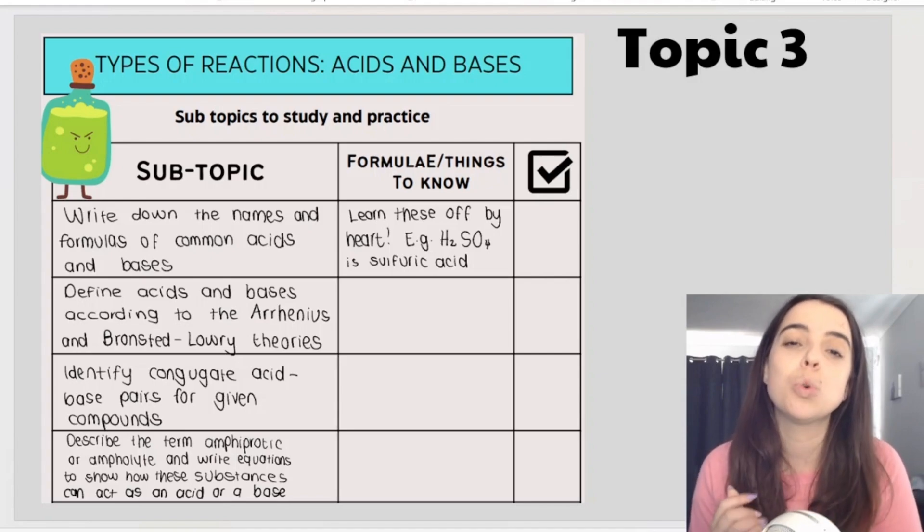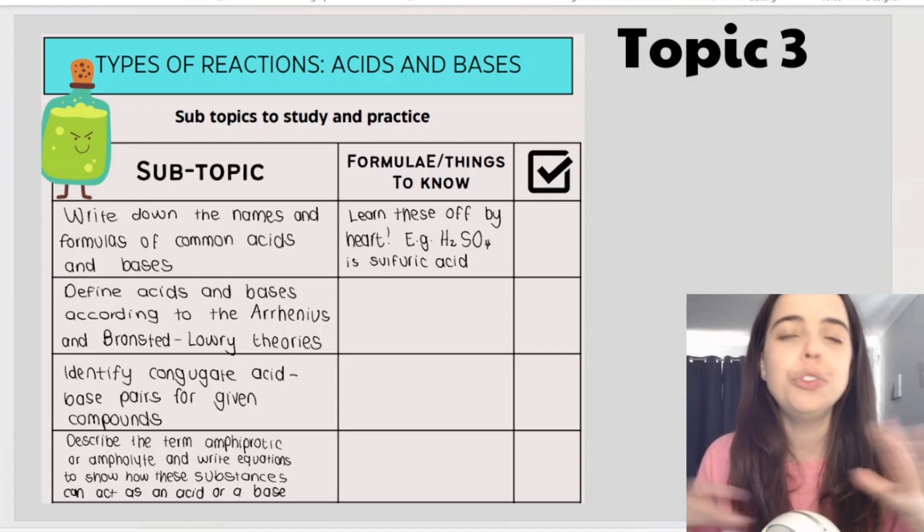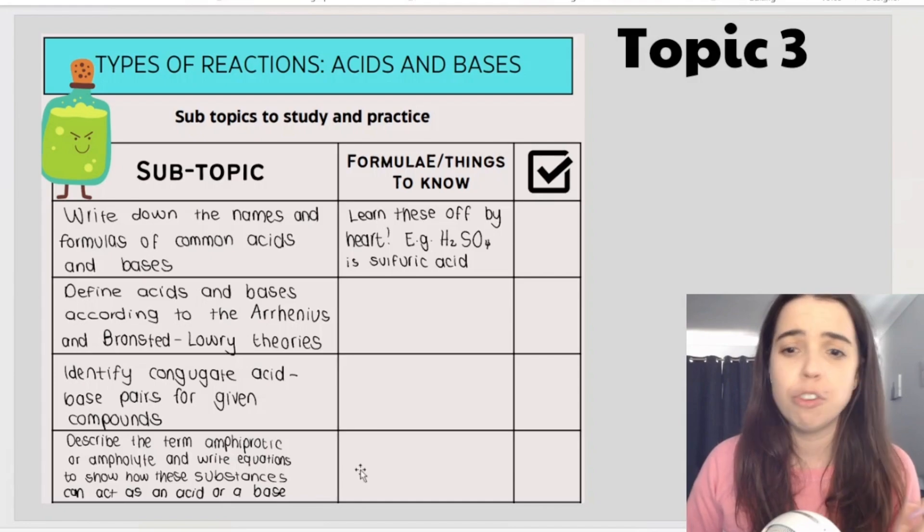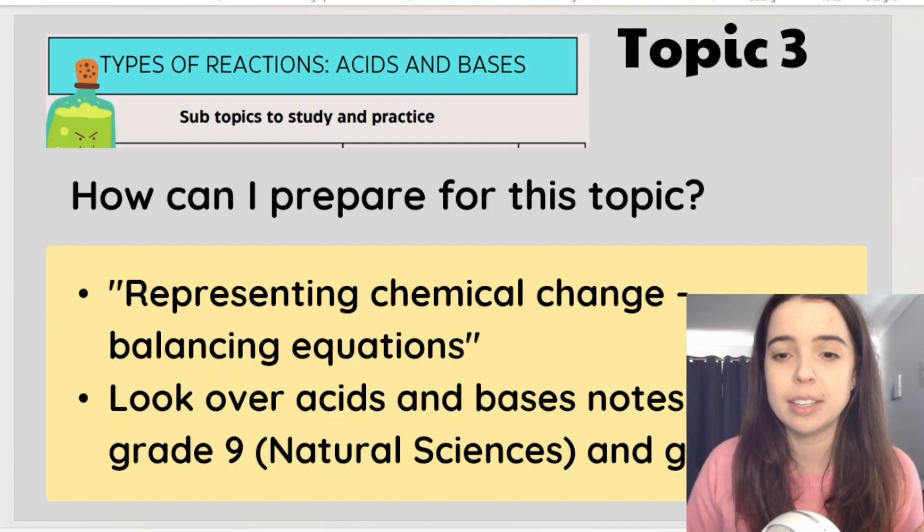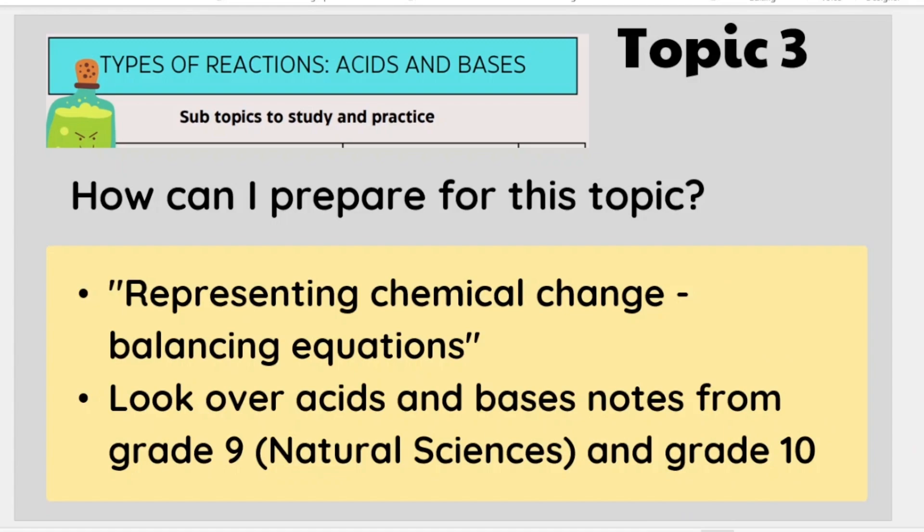So if you haven't done it in grade 10 and you're like whoa I don't remember anything about acids and bases, then I would go back to my grade 9 natural sciences book, go over your notes. Stoichiometry can also feature in this section so it's a good idea to practice your stoichiometry again before your teacher gets to the section.